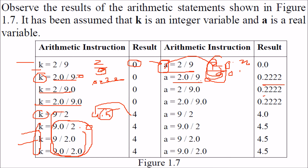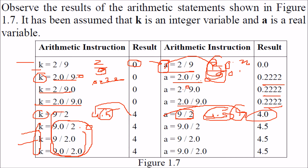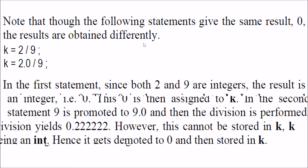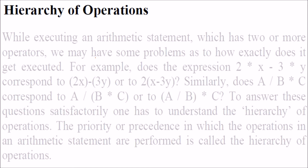For 2/9 where a is a real number: because both are integers it gives 0, so 0.0 is assigned. For 2.0/9.0, proper float values are computed. For 9/2, this gives 4 as an integer result, and when assigned to a real variable a, it becomes 4.0. For 9.0/2.0, you get 4.5 directly, which can be assigned to a. The key rule: what is on the left-hand side determines promotion or demotion.